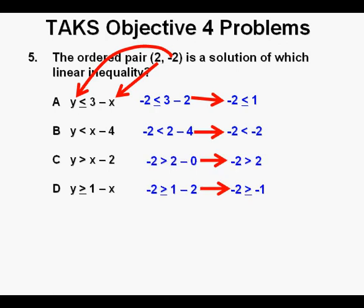We try out all the other answers and B, C, and D are all false. We then circle the correct answer A.